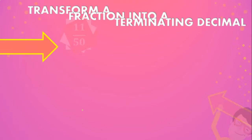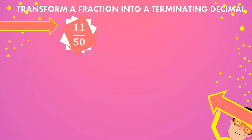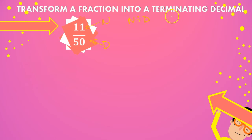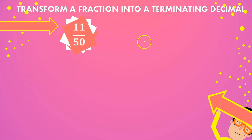The first problem is going to be 11 divided by 50. We have to identify the numerator and the denominator, and we have to remember we're always going to divide the numerator by the denominator. We can do it this way, or we can also do it the other way — it doesn't matter which way you choose to do the problem, you just have to remember that you are dividing the top by the bottom.